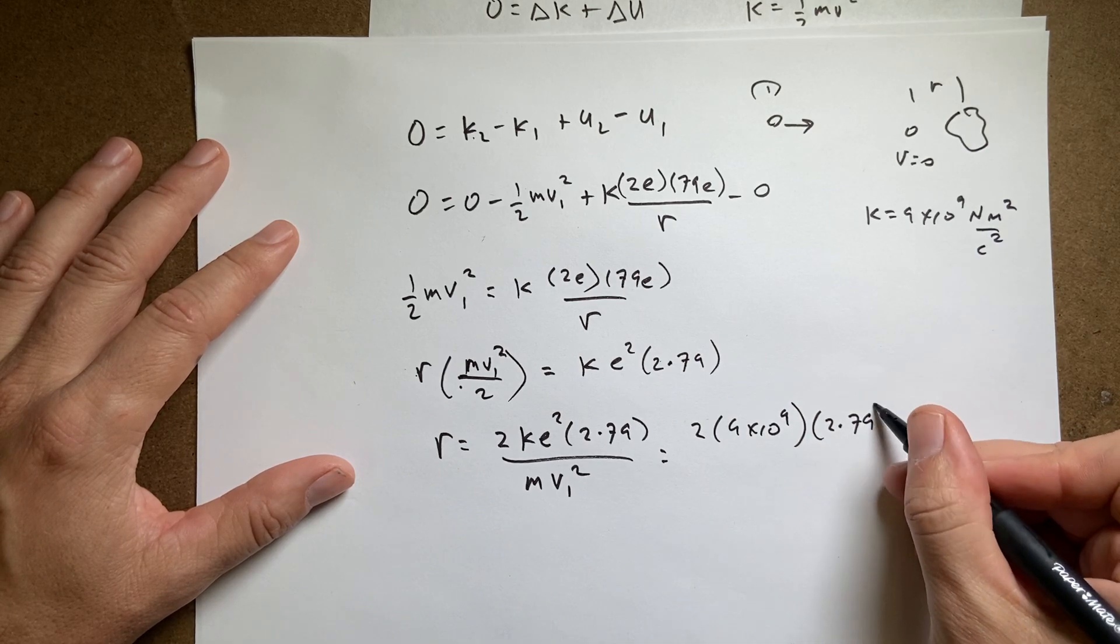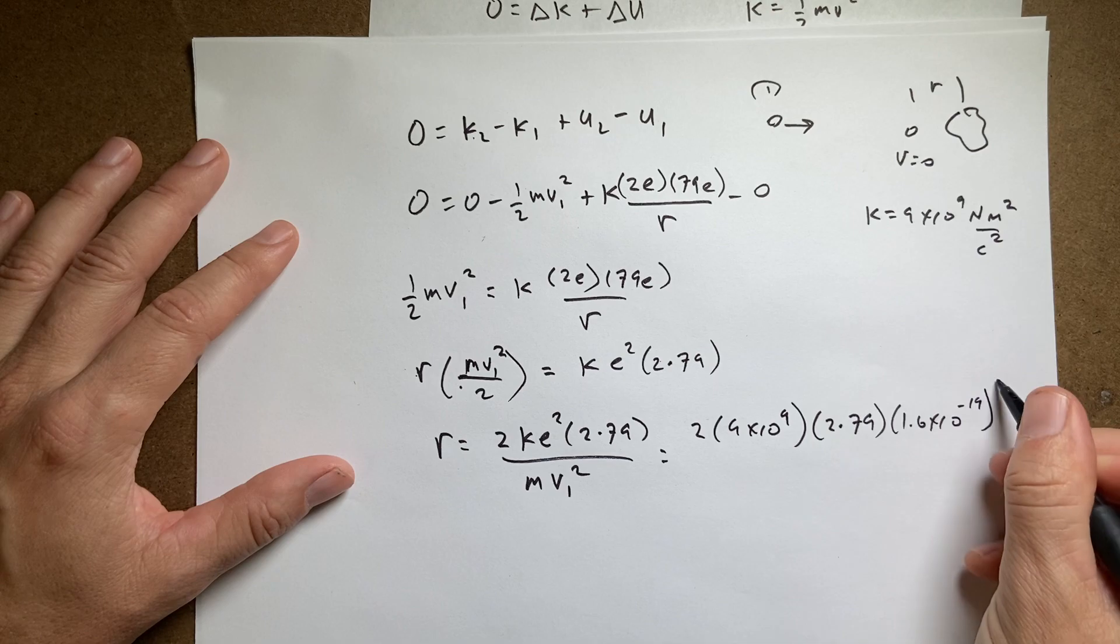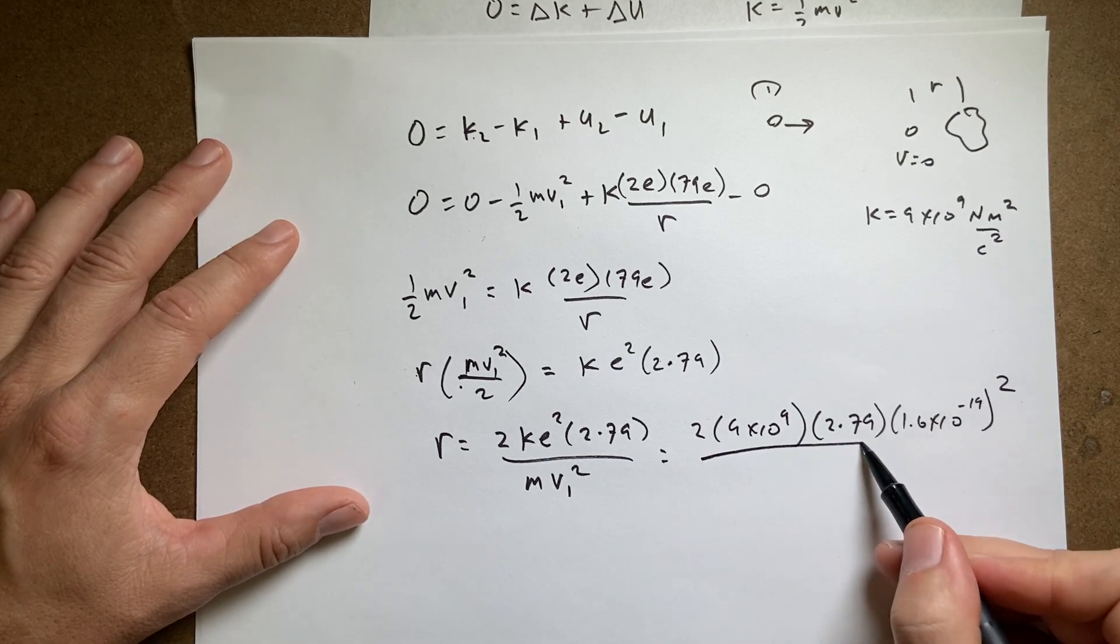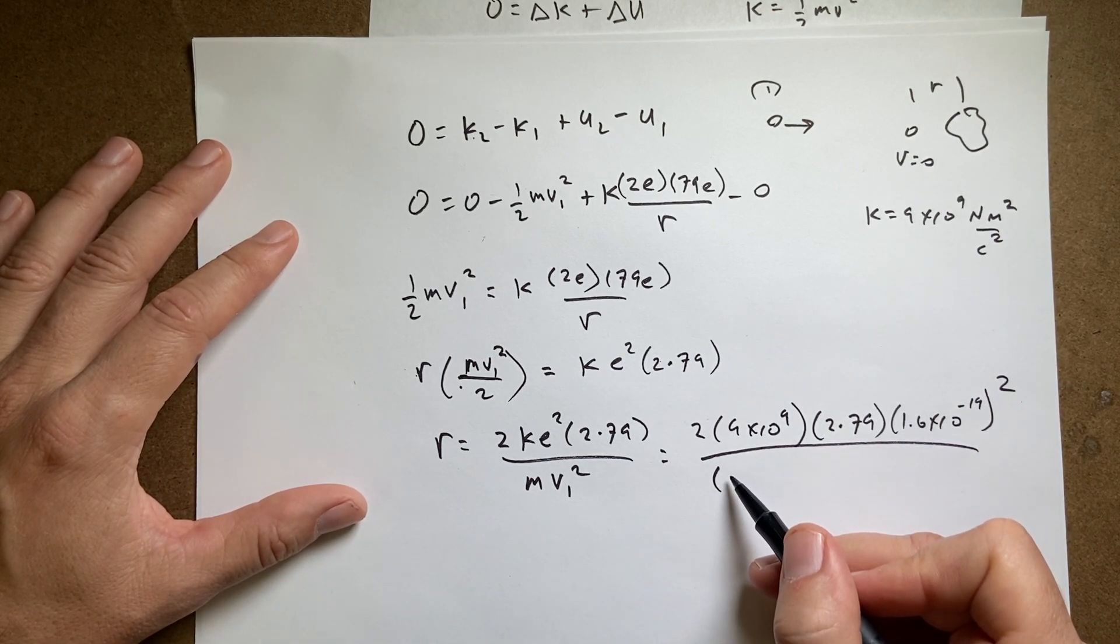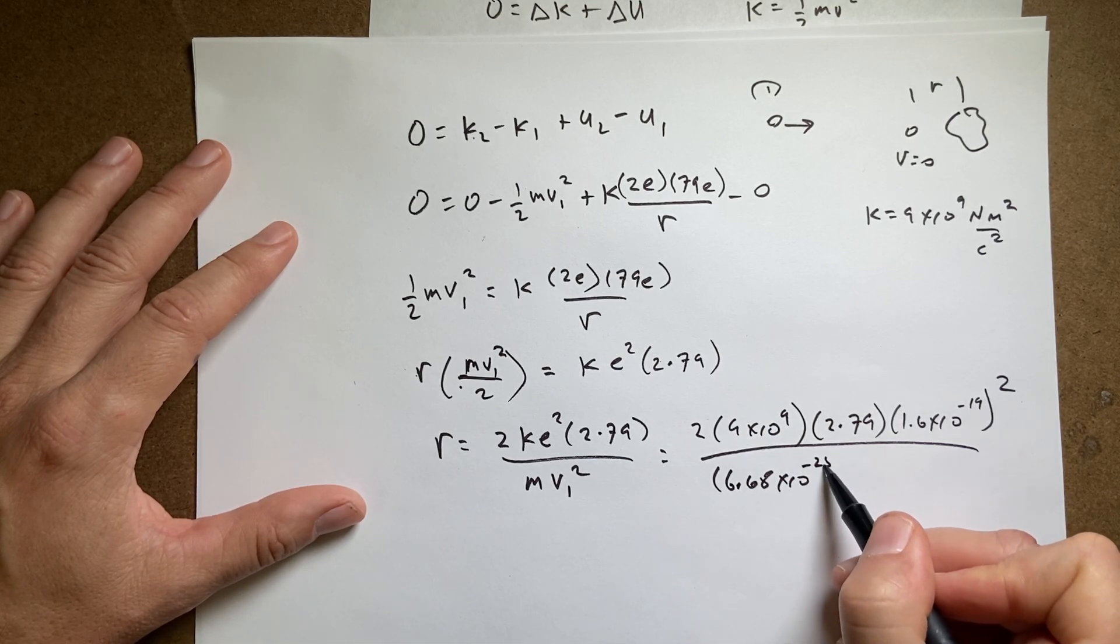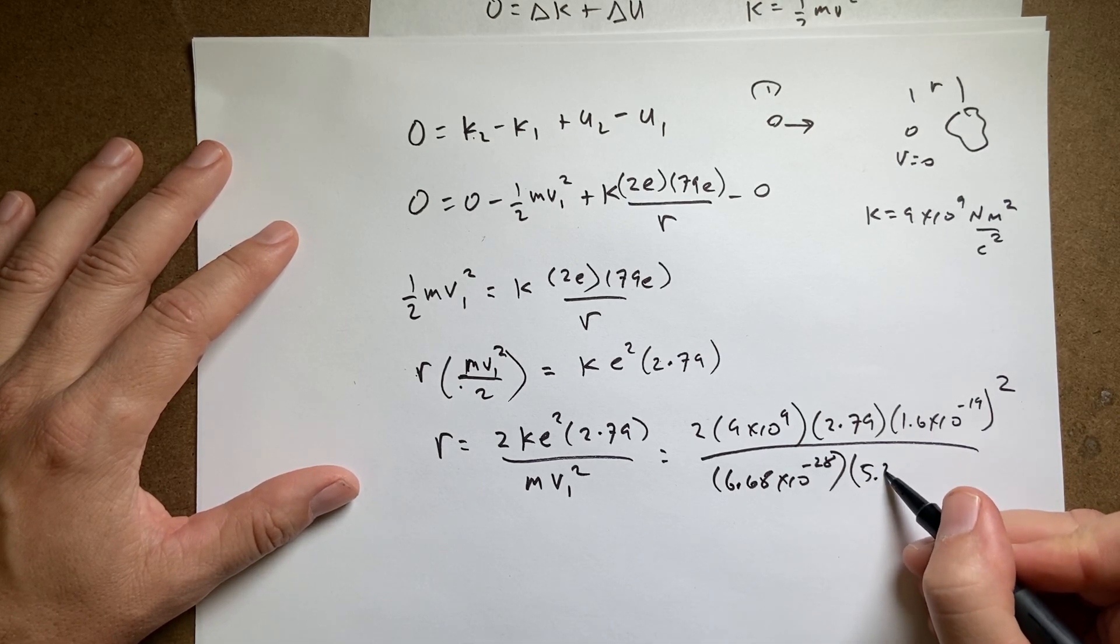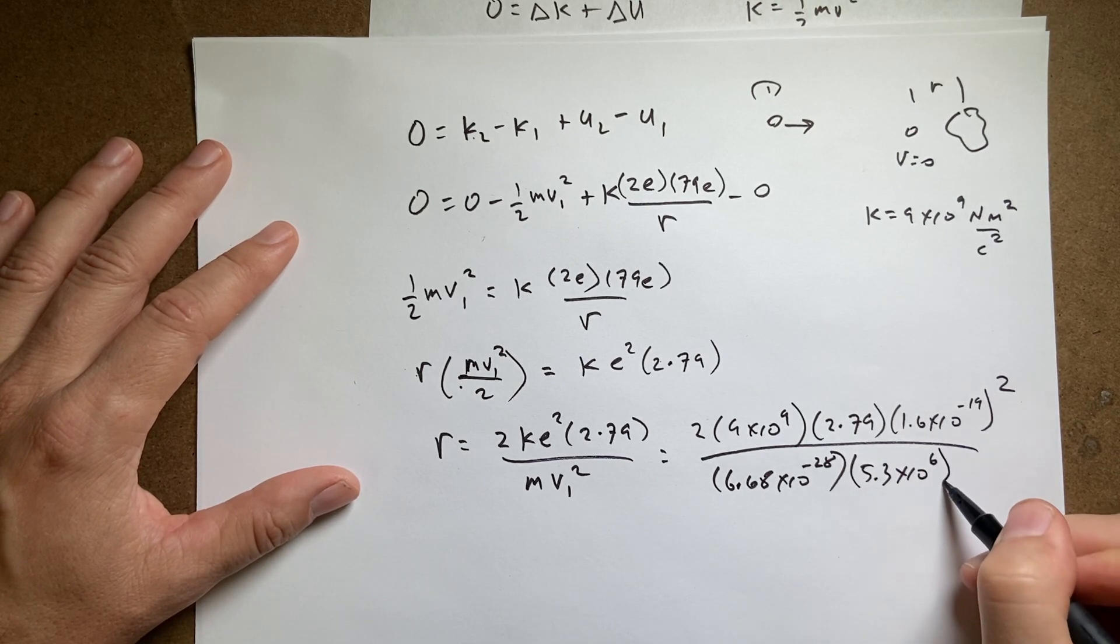I got my e, 79 times 1.6 times 10 to the negative 19th squared. Over 6.68 times 10 to the negative 28th times 5.3 times 10 to the 6th squared.